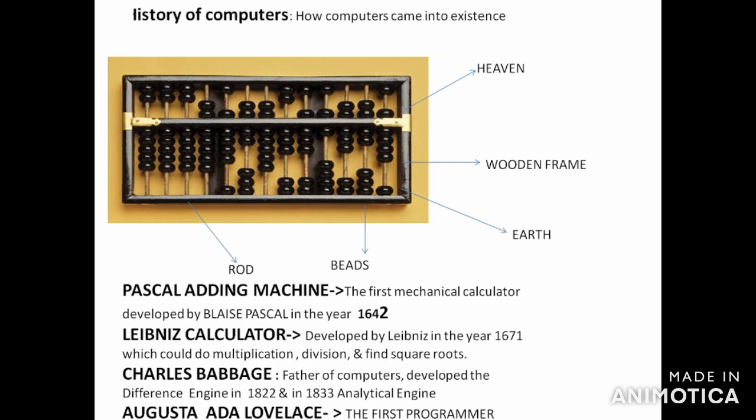Evolution of computers means how computers came into existence. The present-day computers we use today are entirely different from the devices used earlier. We needed something that could help us perform calculations. Earlier, calculations were done with the help of sticks and stones. Let us have a glance through the major milestones in the journey leading to the evolution of the present-day computers.